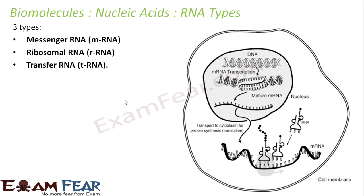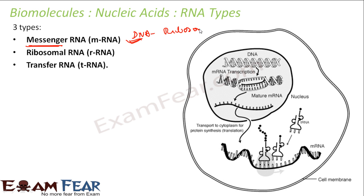Messenger RNA conveys genetic information from DNA to the ribosome. The ribosome is the one which creates proteins. So messenger RNA acts as a messenger — it conveys the genetic information from DNA to the ribosome.